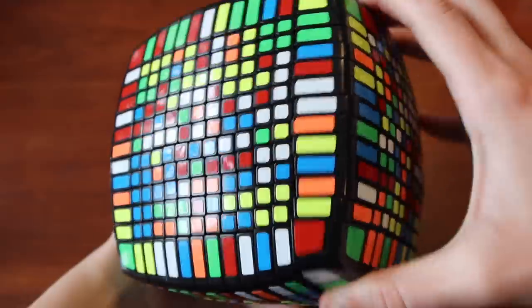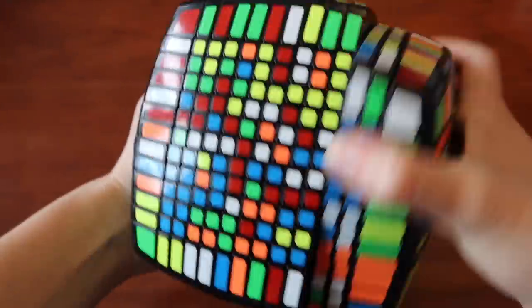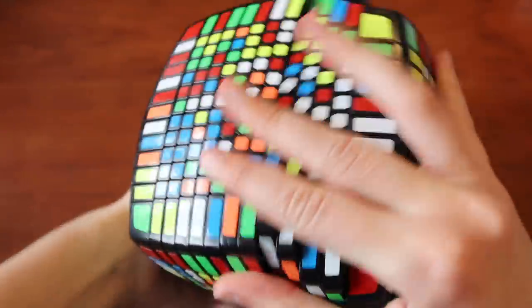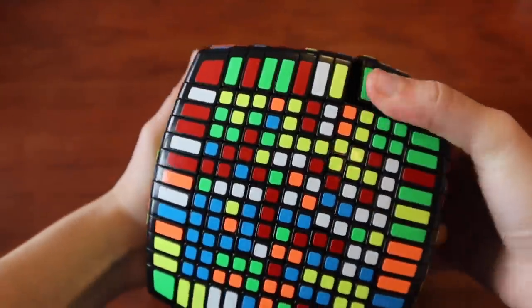Next is the award for worst pain to turn. This actually ended up being a tie between the 13x13 and the 10 centimeter 3x3. 13x13 as I said, it's really big, it just makes it super hard to turn. I pretty much have to use the table. It's hard to hold up because it's so big and because it's very heavy.